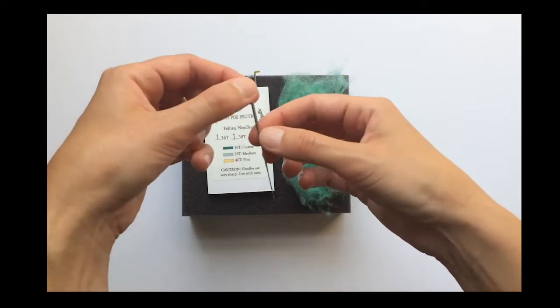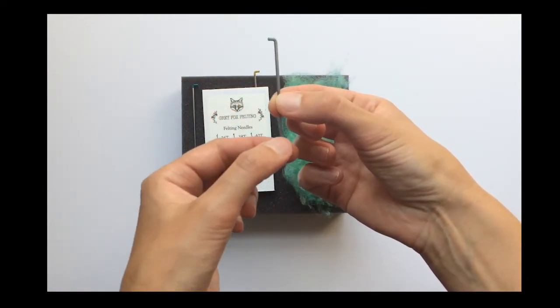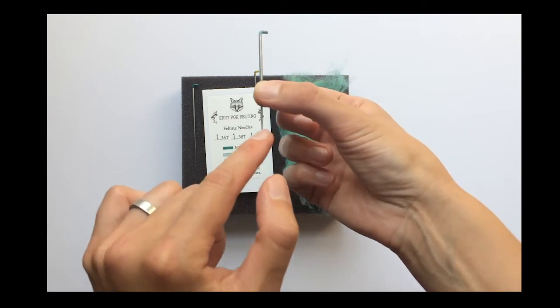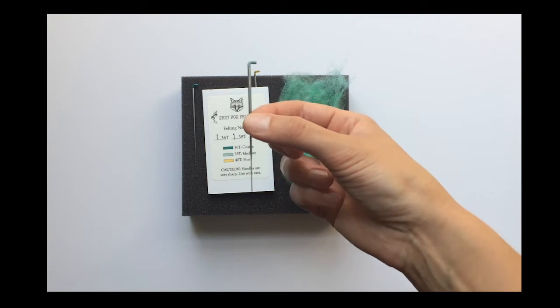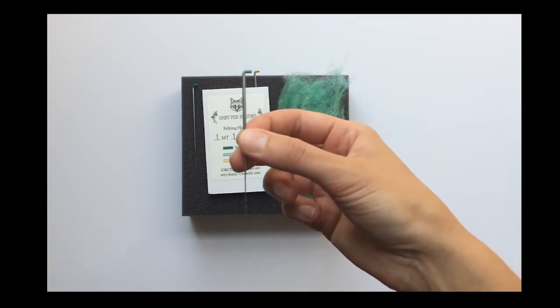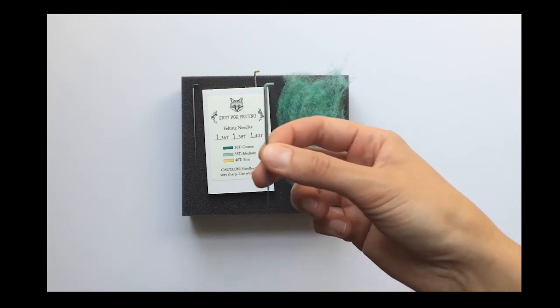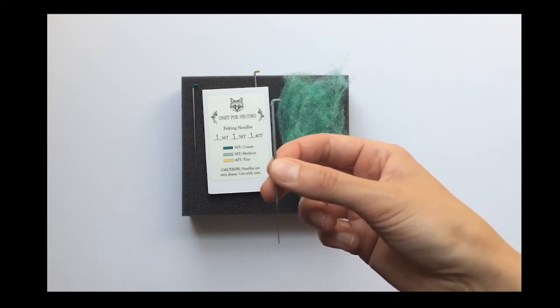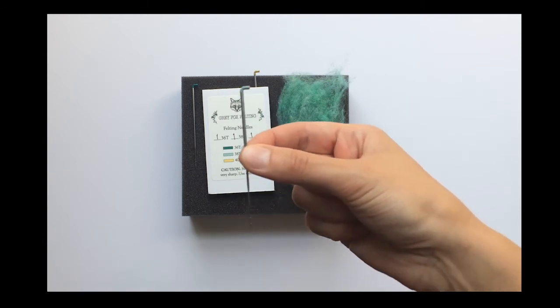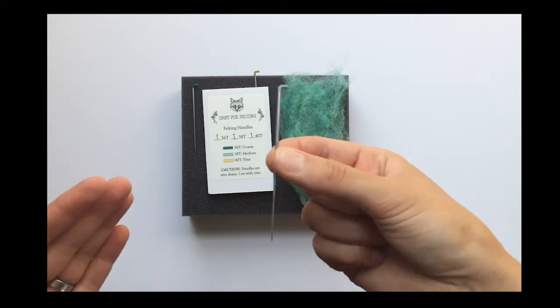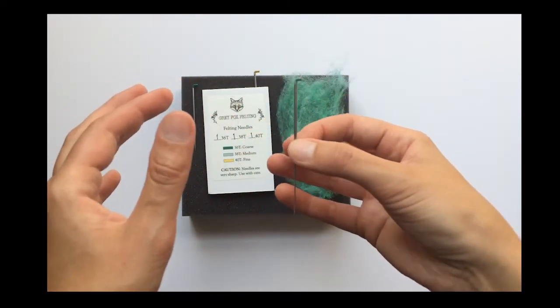So the next one I have is a number 38T. So again, the T, that's the same. It has three sides on the bottom, the barbs on each side, but the 38 is a little bit thinner than the number 36. So this one is a really great all-purpose felting needle. You can use it for shaping. You can use it even for some detailing. So there are some people out there I know who only use a 38T for their entire project. I prefer to use all three, but this is a really great all-purpose needle because it kind of does a little bit of everything.